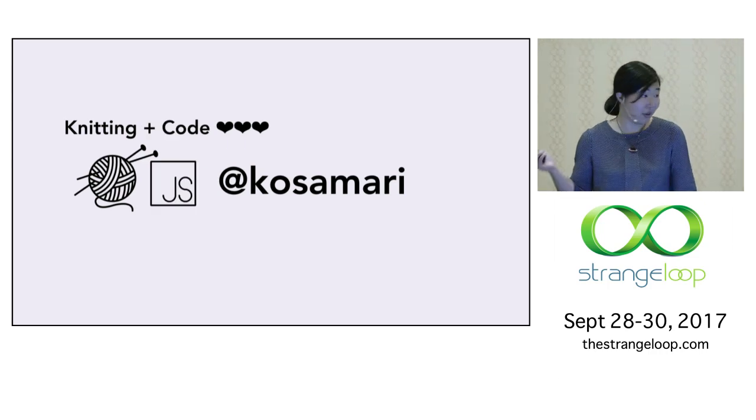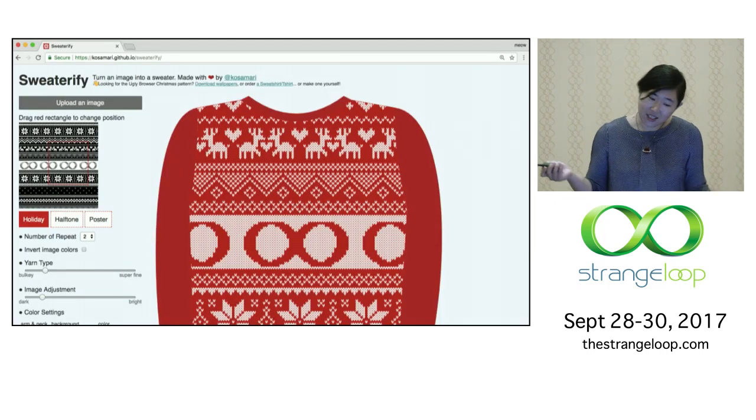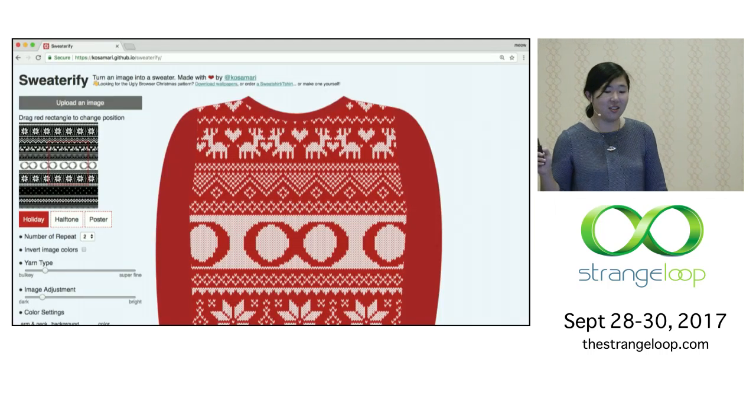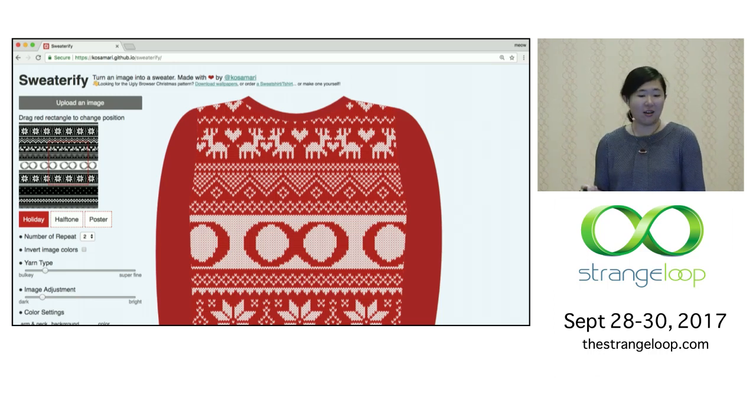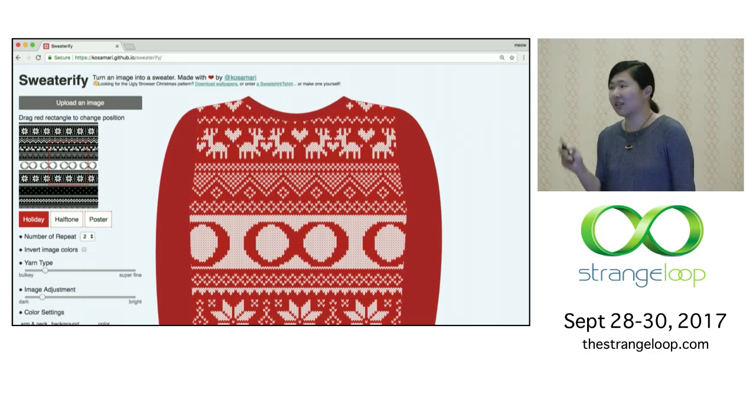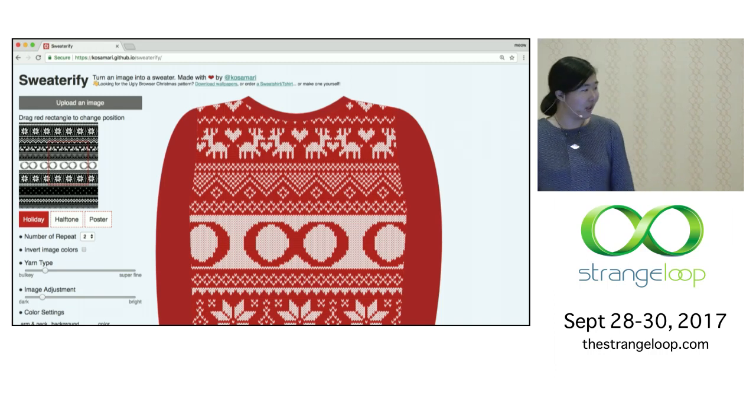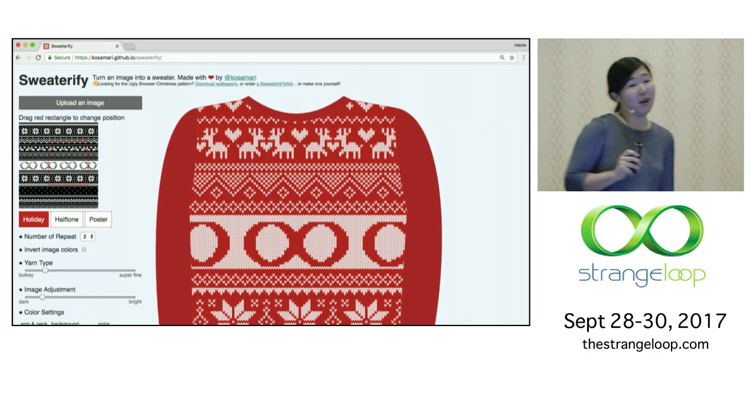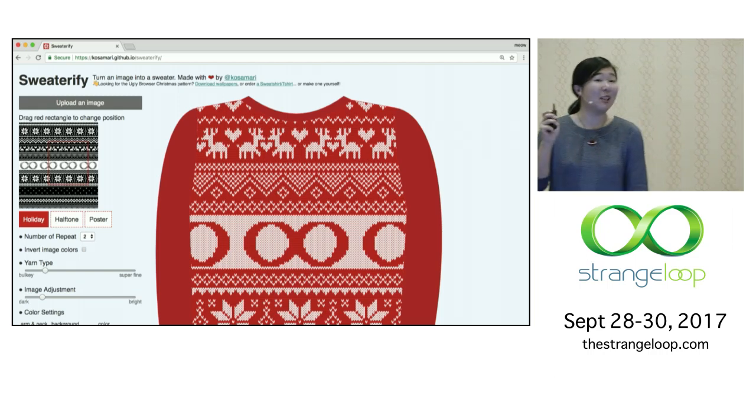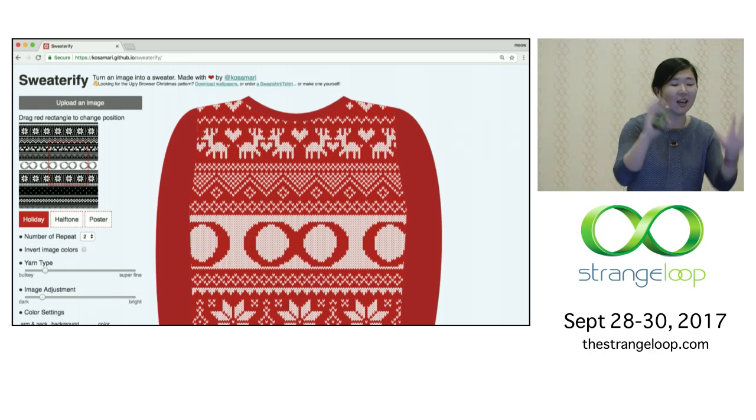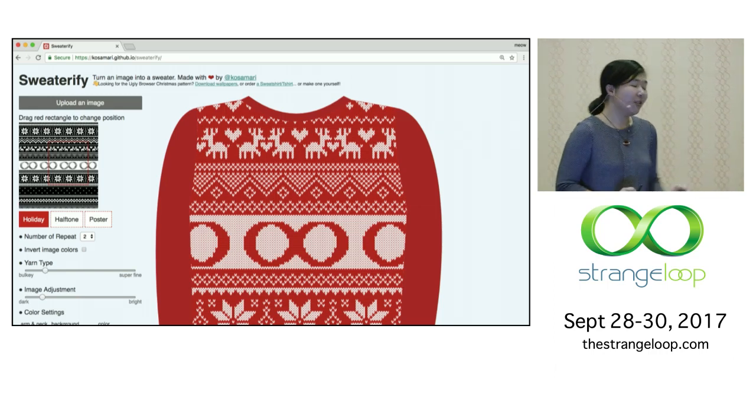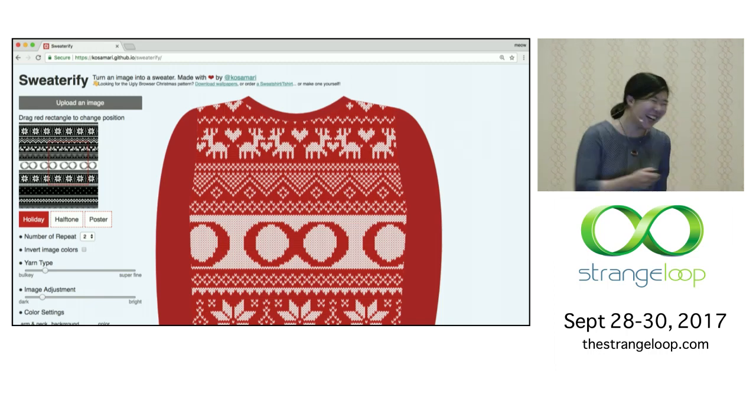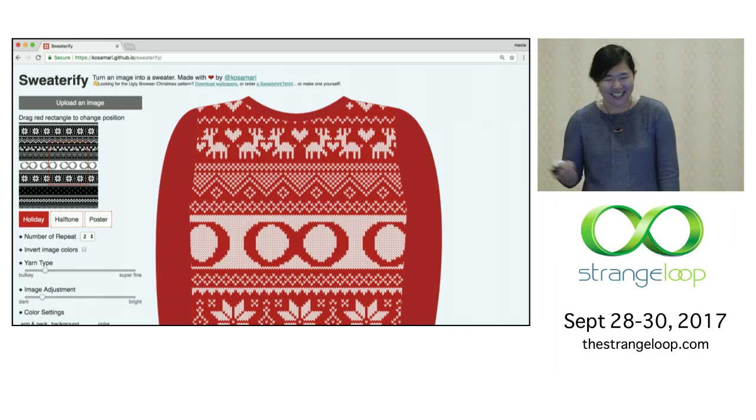One of the example projects that I do is a thing called Sweaterify. Should you like to have a visualization of ugly sweater that's using Strange Loop, then you can upload the image and create a very realistic visualization. I spent a lot of hours looking at SVG and Canvas to have this light type of shadow and face for this knit.